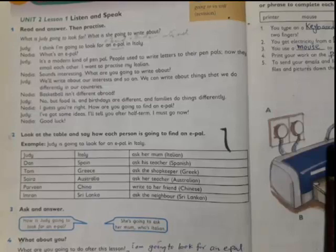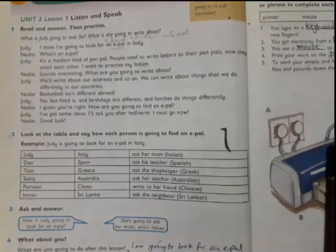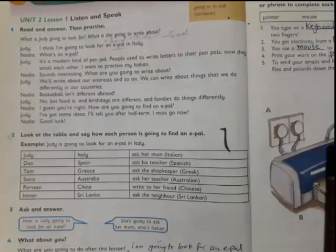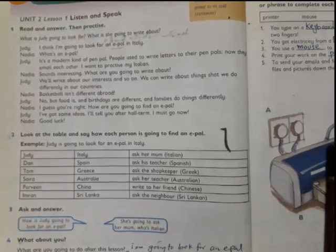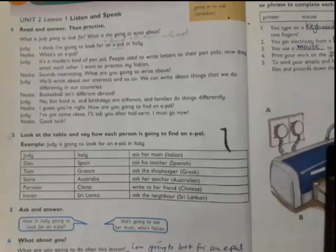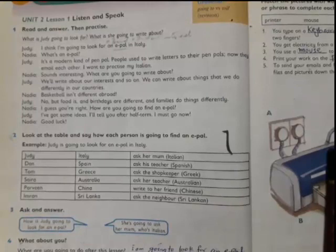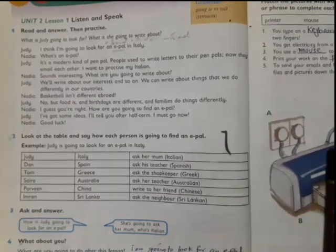Nadia says good luck. So Judy says that they can share the different things which they do differently in their countries, like their birthdays and how the families do different things. Nadia asks how you are going to find a friend and Judy says I will tell you afterwards.